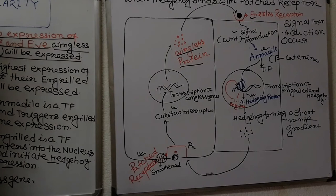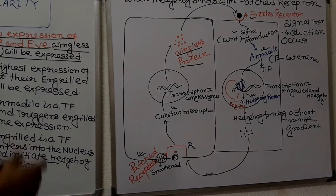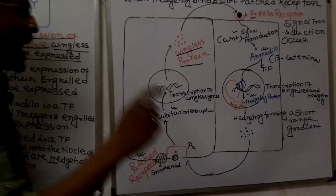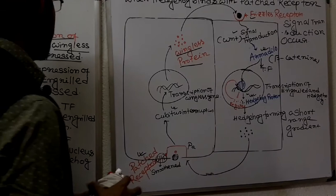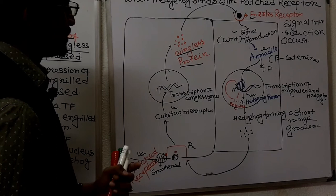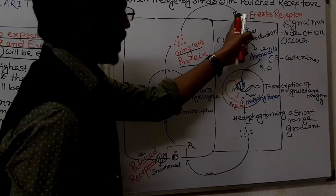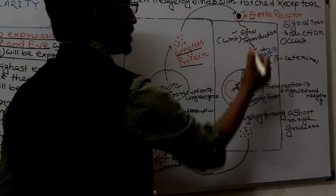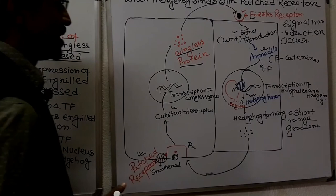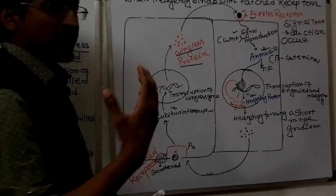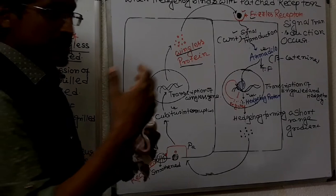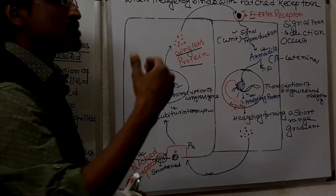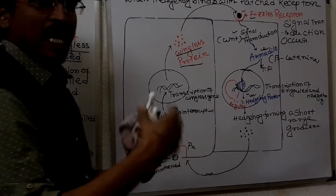This question appeared in the June 2020 exam. To summarize: where there is no expression of fushi tarazu and even-skipped, wingless will be expressed; where there is highest expression of fushi tarazu, engrailed will be expressed; and wingless binds to the frizzled receptor while hedgehog binds to the patched receptor. This protein gradient must be maintained throughout all segments because these proteins are not very stable, so signal transduction must continuously occur.